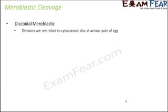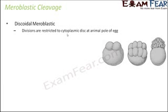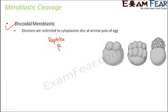In meroblastic cleavage, complete cleavage does not take place — it is incomplete or partial. The first type is discoidal meroblastic, where cleavage is restricted to a disc-like structure at the animal pole of the egg. All the cleavage happens only at the upper end in a disc-like area. This relates to telolecithal eggs, where yolk is present towards the vegetal pole, so cleavage cannot happen there and is restricted to the disc-like area at the top. This type is seen in reptiles, birds, and many egg-laying mammals.